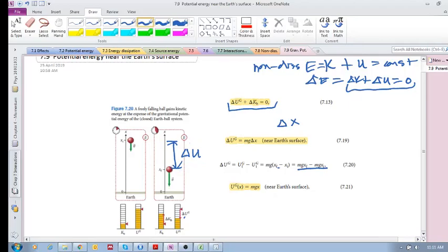This is for delta U's, but if we want to just calculate the potential energy at a specific position, then this is what we have: UG at x, at a specific position.